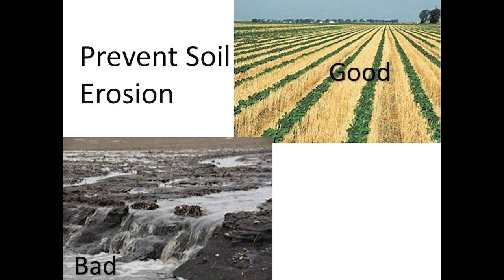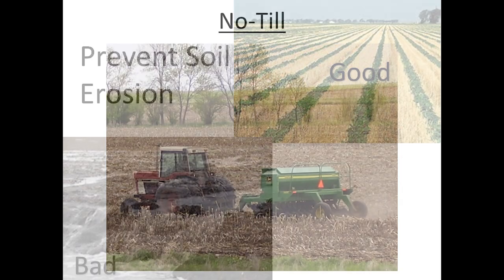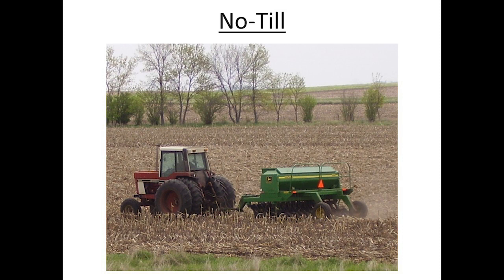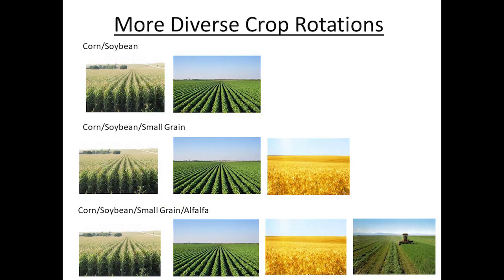The number one thing is to prevent soil erosion — if that's happening, it doesn't matter how much manure you put on, the soil will just keep degrading. No-till is important to keep that soil in place. A more diverse crop rotation also seems to get the system going, get those microbes going, and keep organic matter levels increasing.